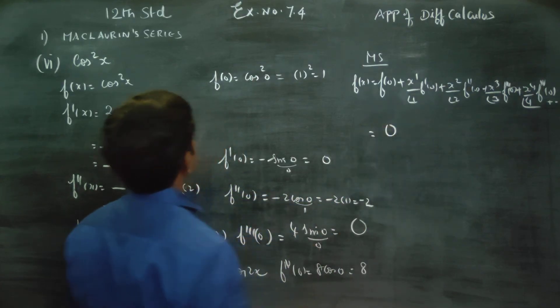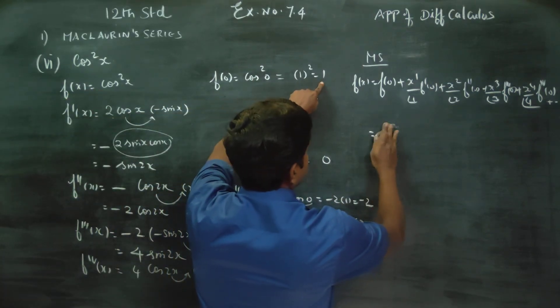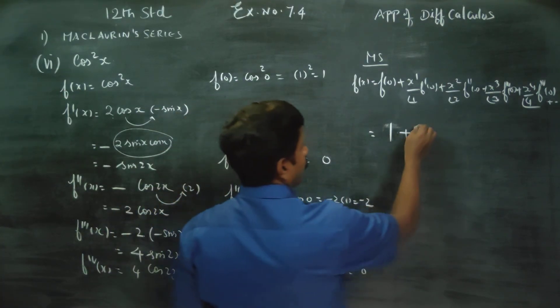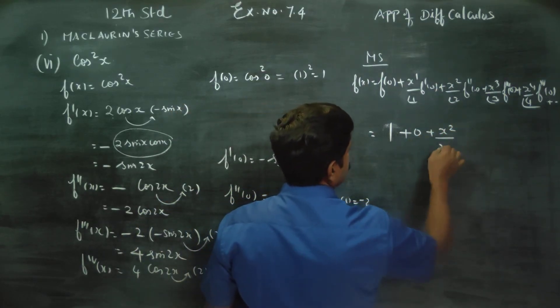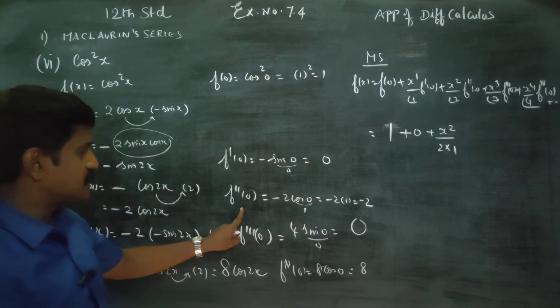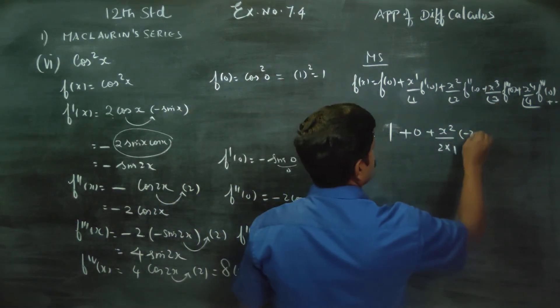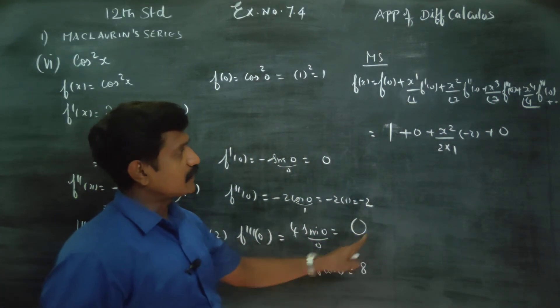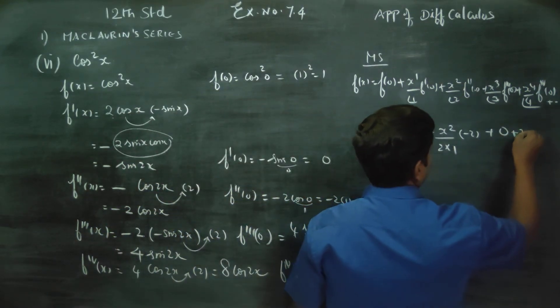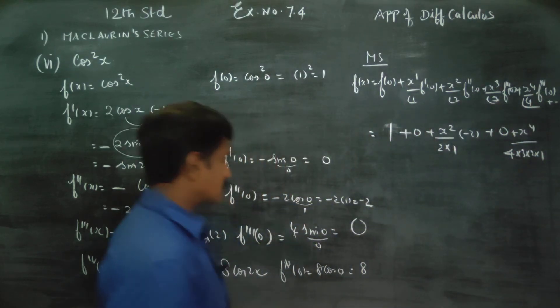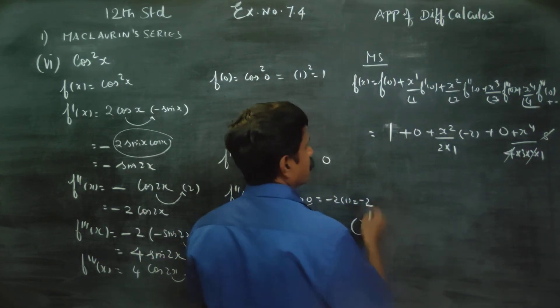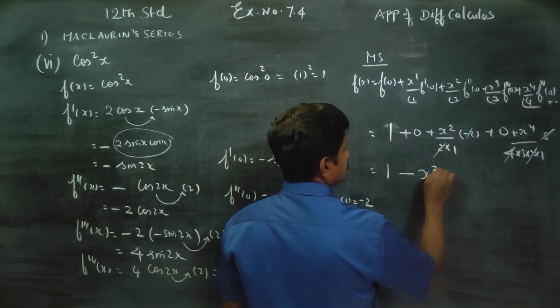f of 0 is 1. f dash 0 is 0. x square by 2 factorial, f double dash 0 is minus 2. x power 3 term, f triple dash 0 is 0. x power 4 by 4 factorial, 4 into 3 into 2 into 1, f4 of 0 is 8. 4 and 2s cancel to 8. Your answer will be 1 minus x square plus x power 4 by 3.